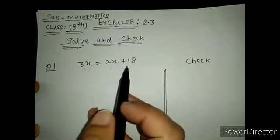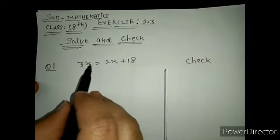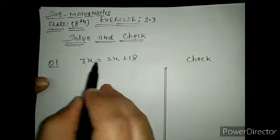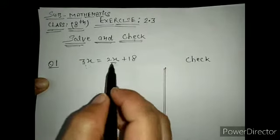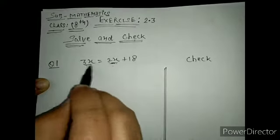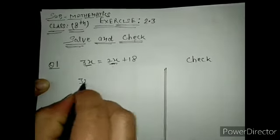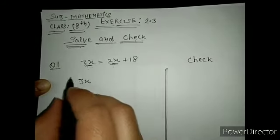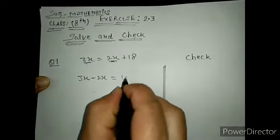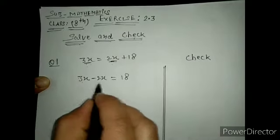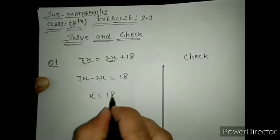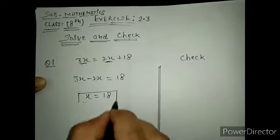First we will solve the equation. You know the rule of solving equations — this is the left hand side and this is the right hand side. Now find the value of x. You have to bring all x terms to one side. 3x is positive on the right side; if it comes to the left side its value will be negative. 2x is positive here. So the value of x is 18. This is your answer.